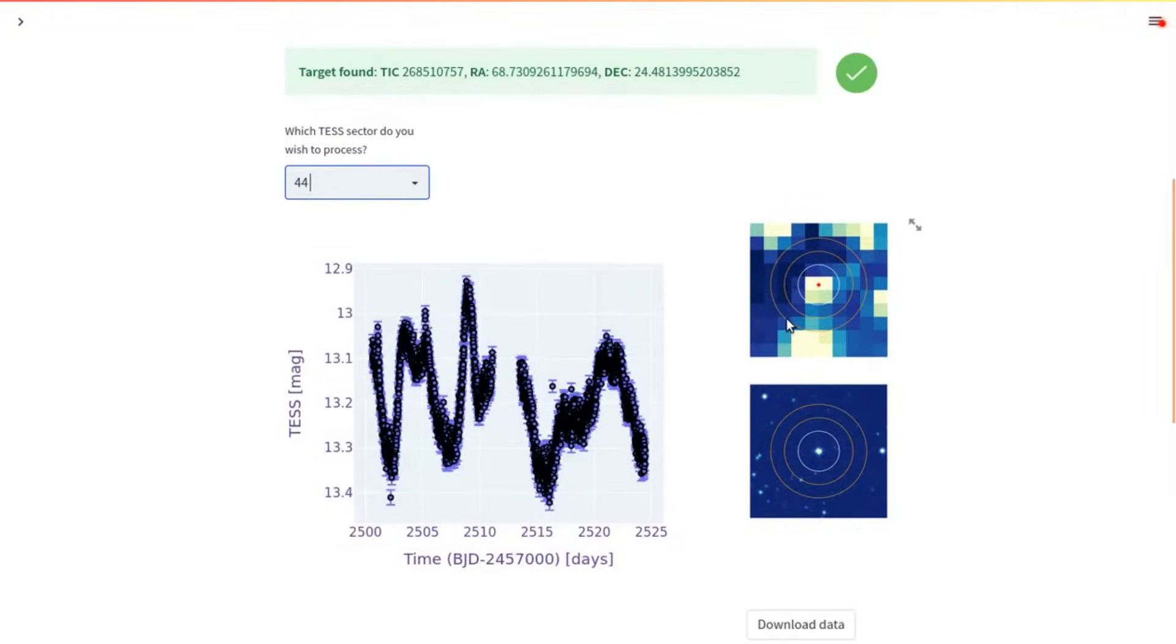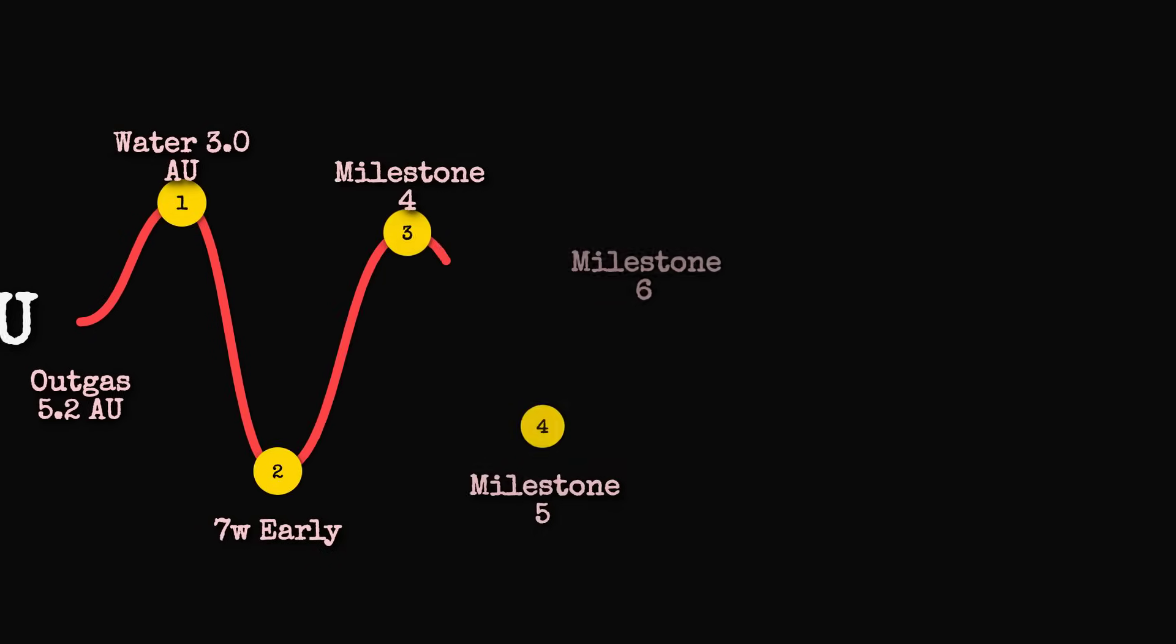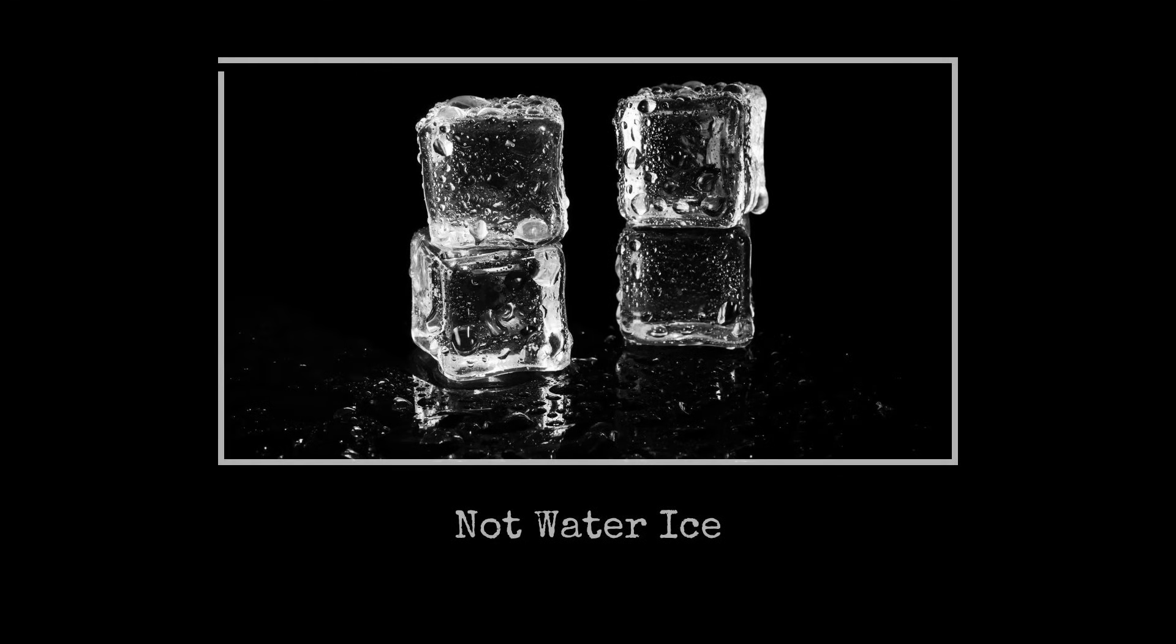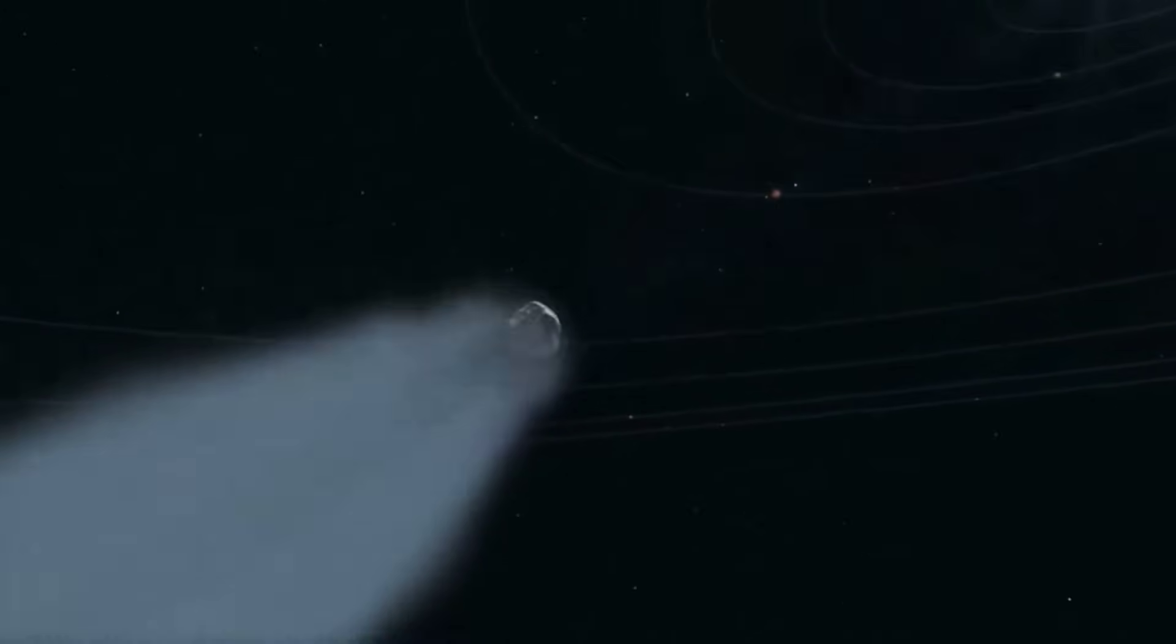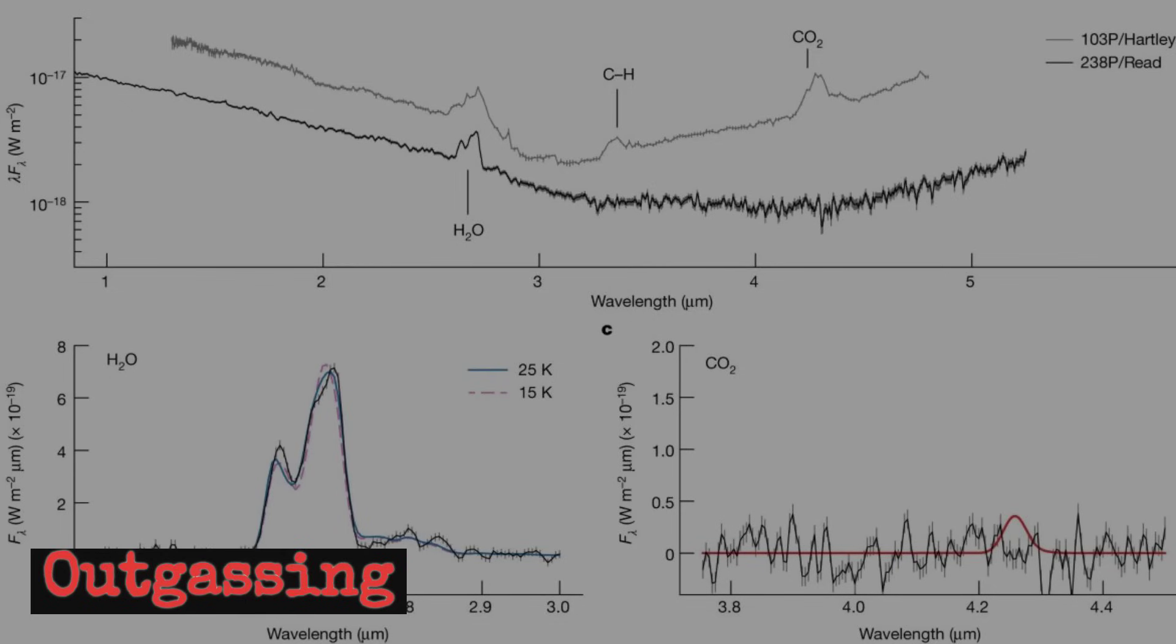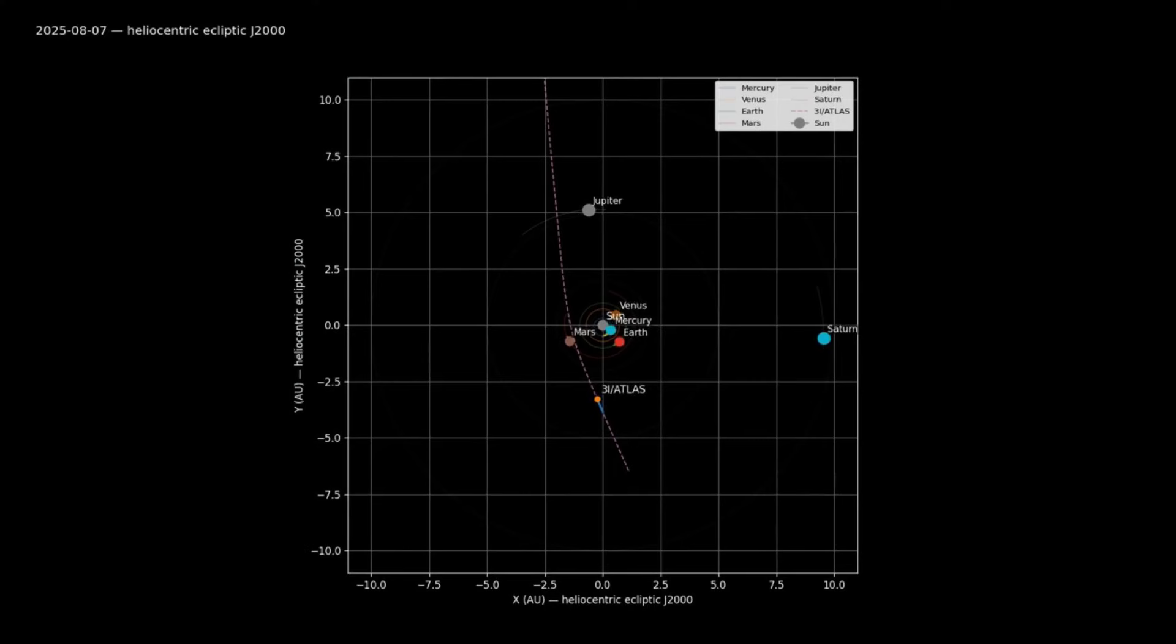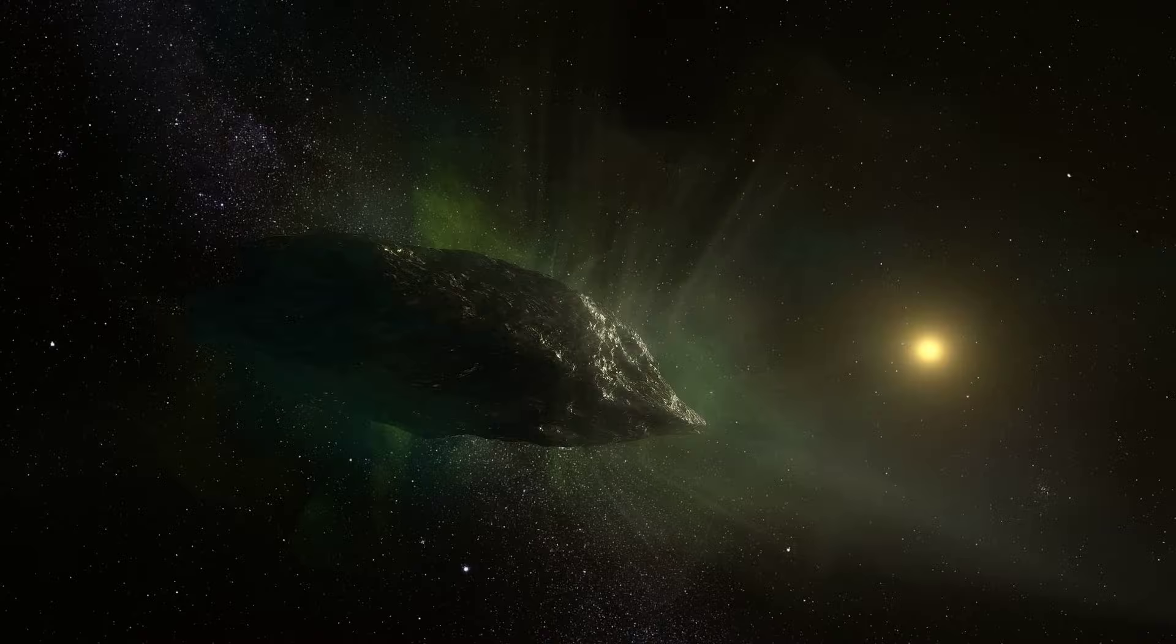Space survey teams pore over time-stamped readings from TESS, SPHERE-X, and a patchwork of amateur images. The early onset of activity, weeks before solar heating should have triggered anything, rules out ordinary water ice as the driver. Instead, the outgassing appears constant, a slow exhale that never falters. Each instrument, working in isolation, finds the same result. The phenomenon is real, not an artifact. 3I-Atlas is awake, and it has been breathing the entire time.